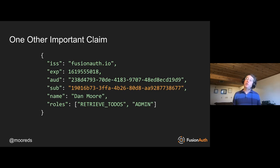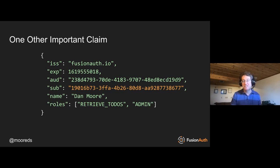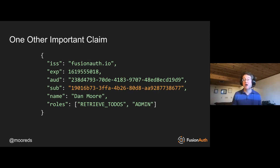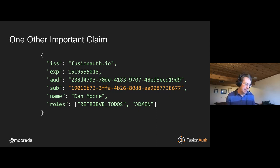There's one other important standardized claim you should know about: the sub claim. The actual value isn't defined in the spec, but the meaning is 'who is this JWT about?' So ISS is who created the JWT, AUD is who it is for, and SUB is who it is about. It's also called the principal in some literature.